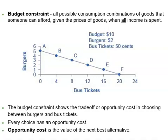The budget constraint shows the trade-off or opportunity cost I face in choosing between burgers and bus tickets. Assume that I am currently at point D, where I can afford 12 bus tickets and 2 burgers. How many bus tickets would I have to give up in order to get one more burger while staying within my budget? Since bus tickets cost 50 cents per ticket, I would have to give up 4 bus tickets to afford one more burger. Therefore, the opportunity cost of one burger is 4 bus tickets. You can also say that the opportunity cost of one bus ticket is a quarter of a burger.